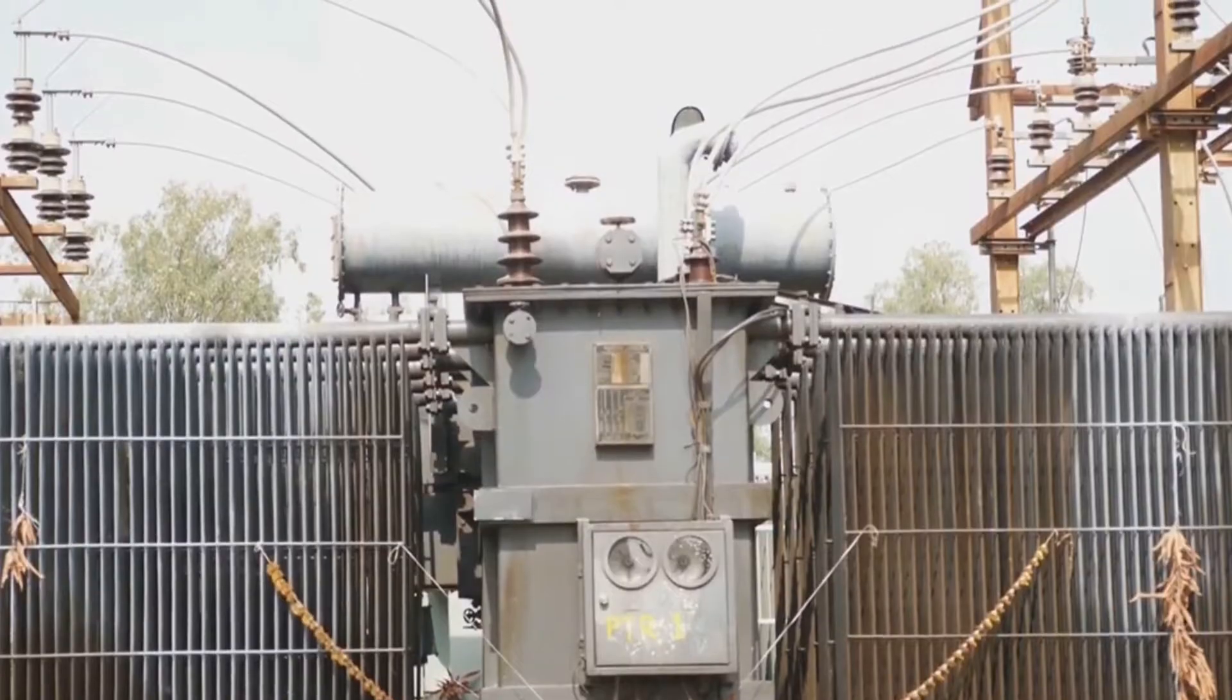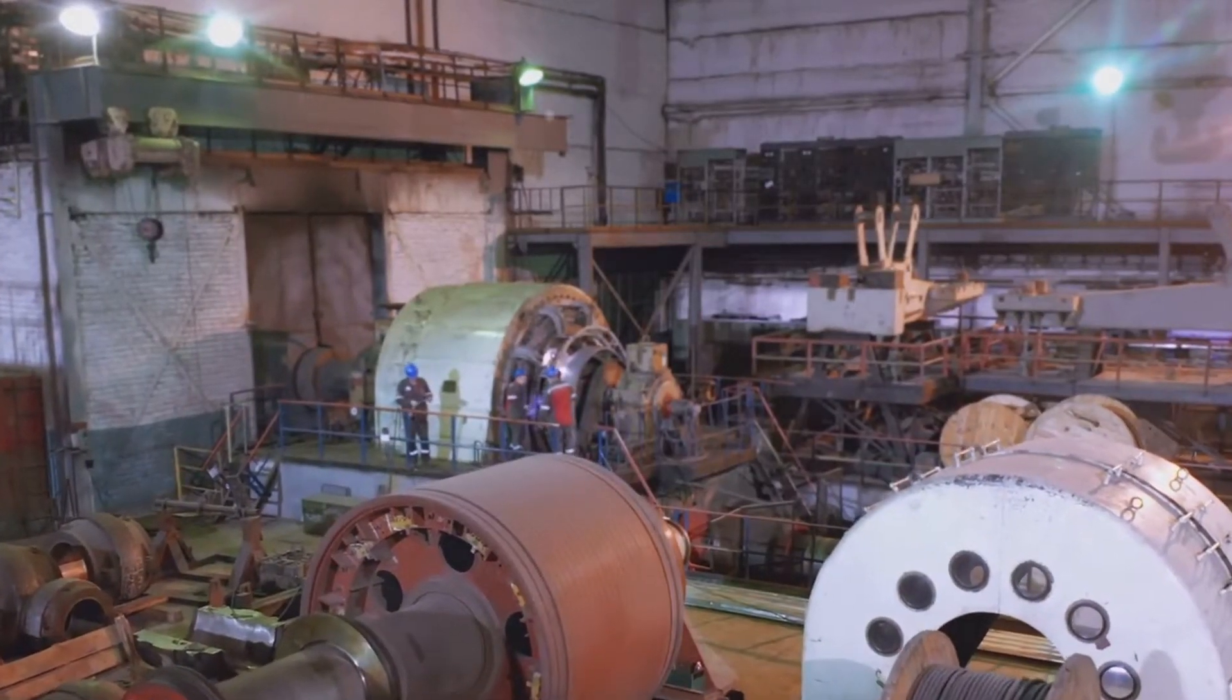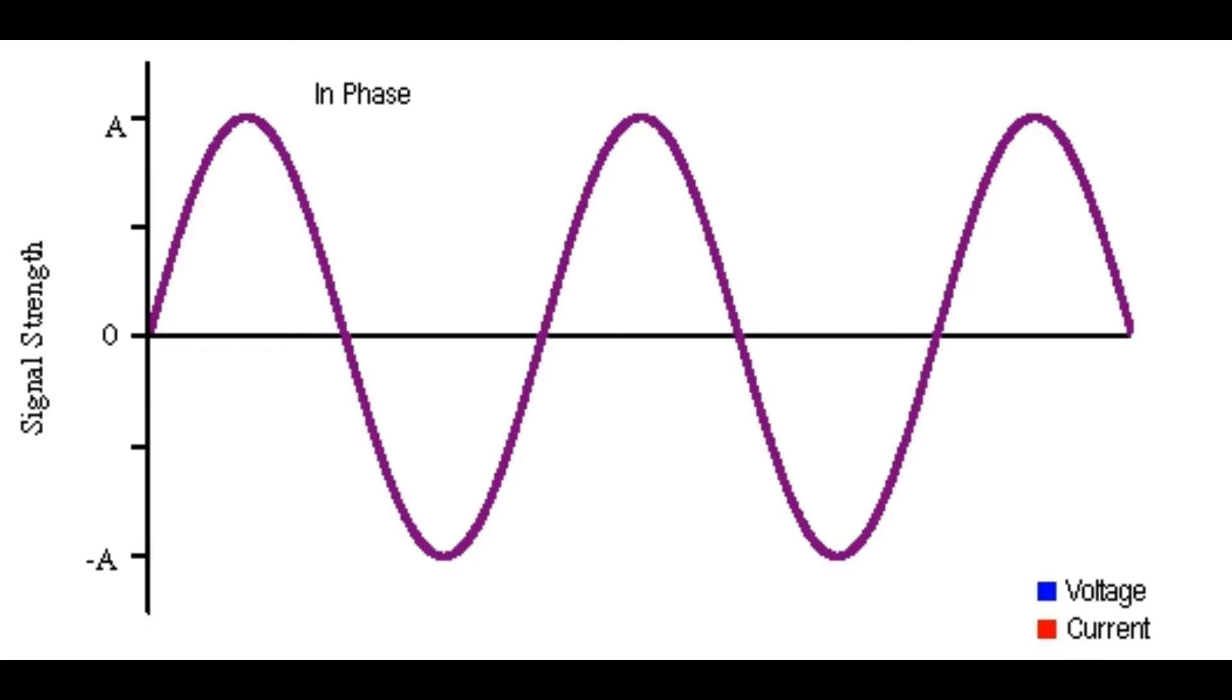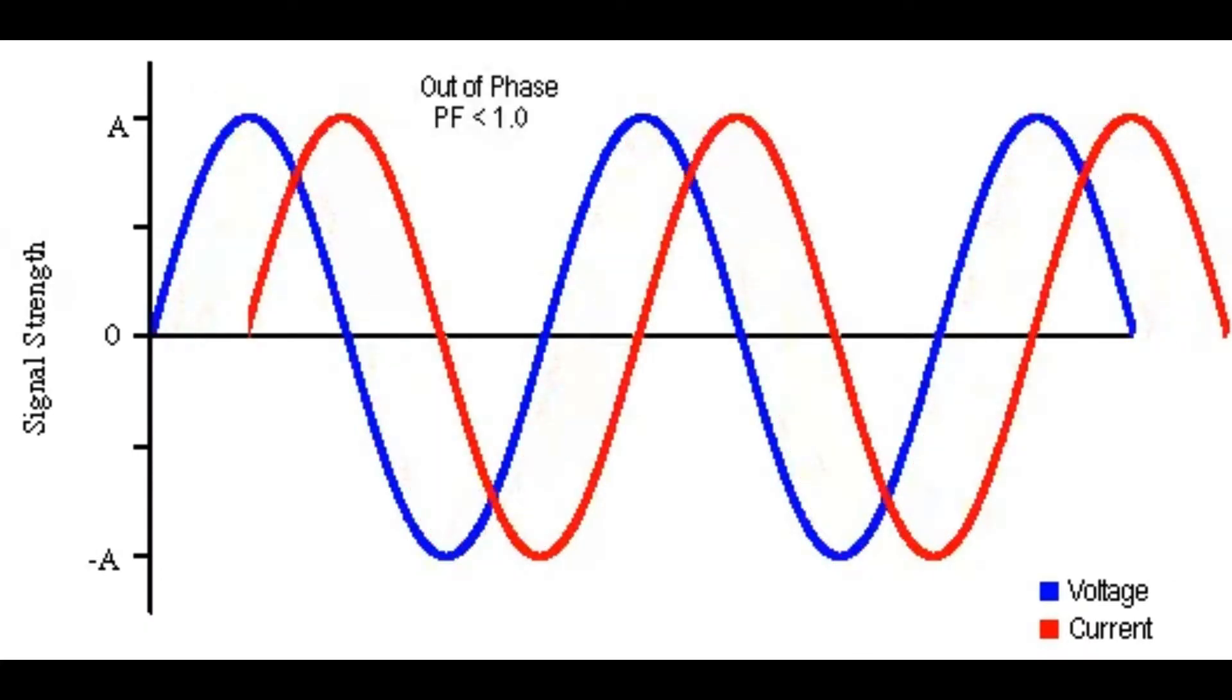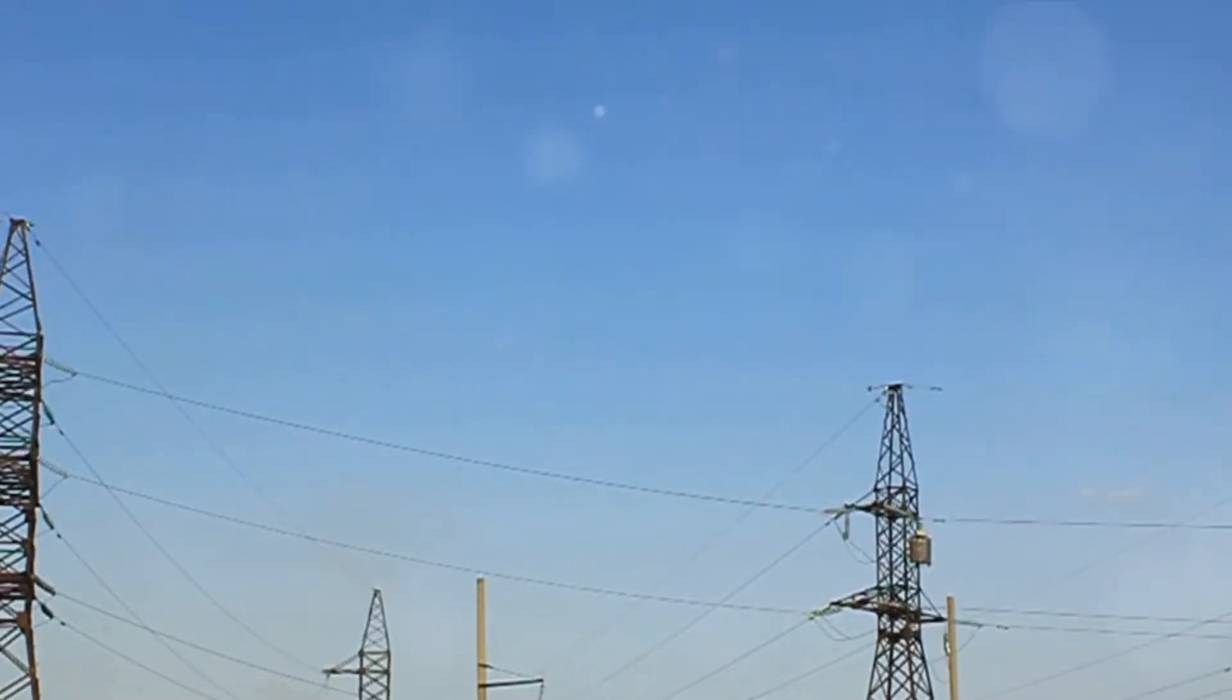On the other hand, we have inductive reactive power, generated when the current lags behind the voltage. This is typical in inductive components like motors and transformers. It's the power consumed in creating magnetic fields, essential for these components to function.